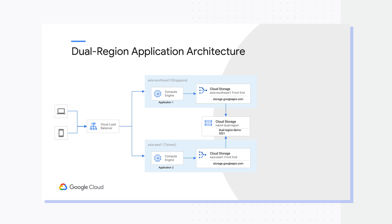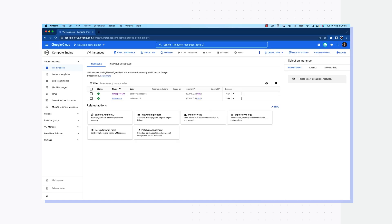Wow, that sounds amazing. I think it would be great if we can get a quick demonstration of this capability. Absolutely. Let's get straight into the demo. This is a typical HA architecture with a load balancer to send traffic to a healthy backend instance in two regions. We'll be simulating a portion of this architecture to showcase the functionality of dual region, focusing on the compute layer and how it interacts with the dual region bucket. We'll use compute engine VMs in Singapore and Taiwan region. I have already created one VM in each region, and I'll now create a dual region bucket across these two regions as well.